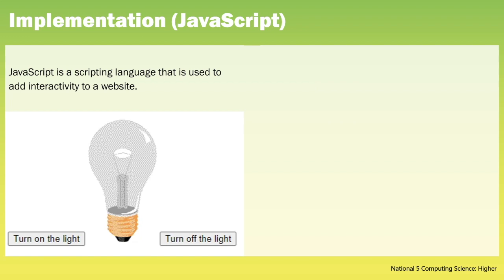Moving on now to JavaScript. JavaScript is the main client-side scripting language. It can be used to create, delete and manipulate HTML elements. JavaScript can be contained in the HTML document or in its own file and linked to a web page in the same way that CSS can be linked. At Higher, JavaScript functions are created that will change what appears on screen depending upon what the user does with the mouse. So for this example here the user clicks on a button and the image is then changed.